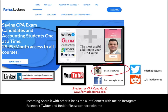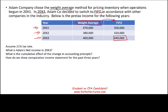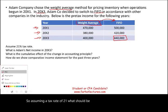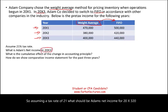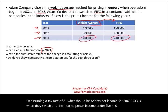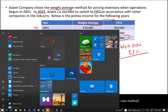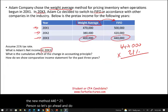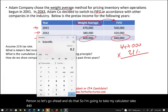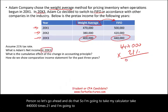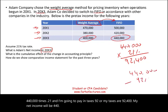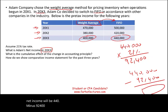Assuming a tax rate of 21%, what should Adam's net income be for 20x3? In 20x3, when they switch, the pre-tax income under FIFO is 440,000 and under weighted average is 400,000. We use the new method — 440,000 times 21% — giving us taxes of 92,400. Net income will be 440,000 minus 92,400. This is how we report net income in 20x3.